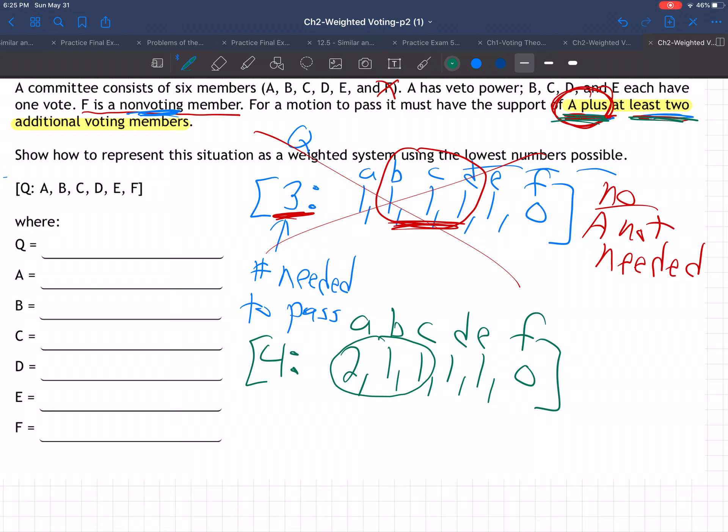Right? You need A and two others, like A, B, C would work. That looks good. Let me fix this, right? Or you could have A, like with C, D, A, C, D. That'd be four votes. That's perfect. So is this right? No. Same problem as last time. You could have B, C, D, and E all get together. That's four votes. And they could pass something without A, right? You've got to have A.